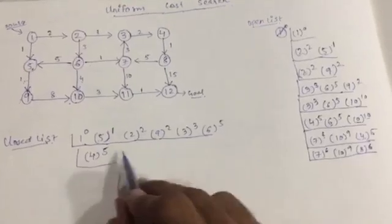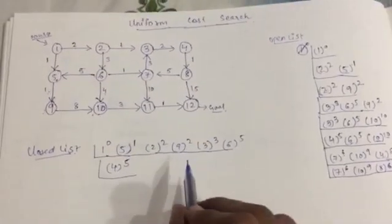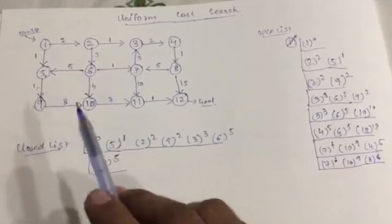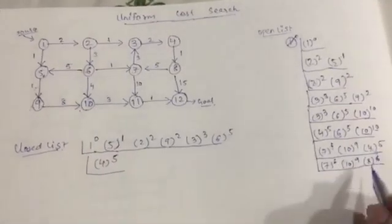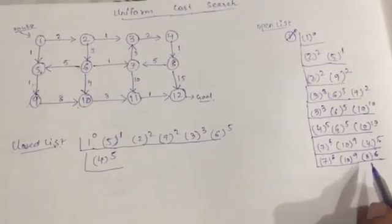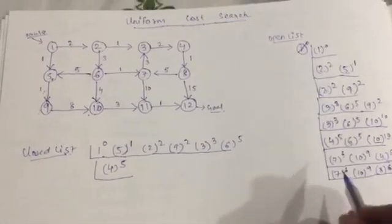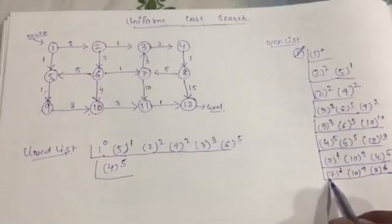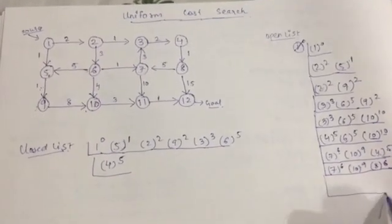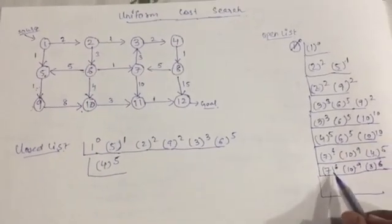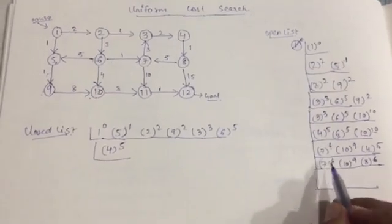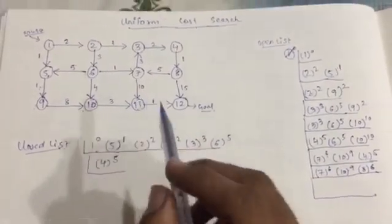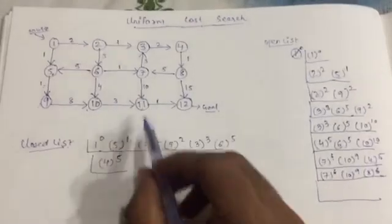Maintain this order because at the end you need to backtrack and find the minimum distance, so this will be helpful. From the open list with 6, 9, and 6, node 7 came before, so expand node 7. From node 7 you can move towards node 11, giving cost 16.